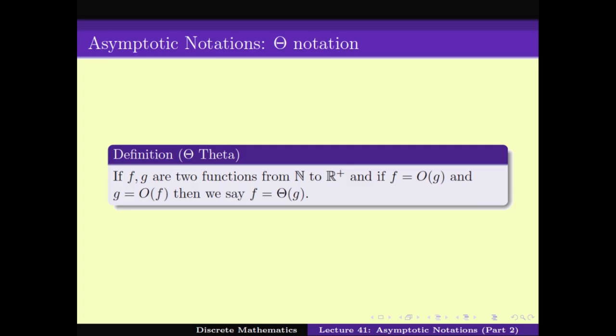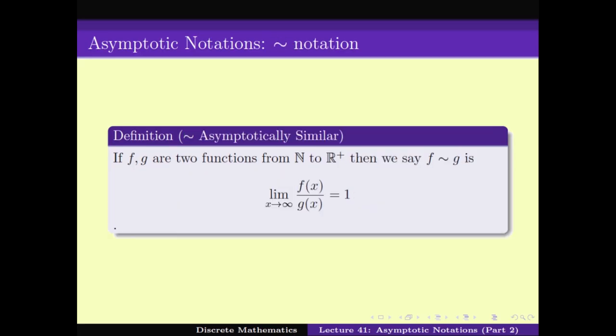This is what helps us to mathematically write down what we mean by 'asymptotically this function equals this.' There is a notation even stronger than Theta, known as the tilde notation, called asymptotically similar. f(x) and g(x) are similar if the limit as x tends to infinity of f(x) divided by g(x) equals 1.